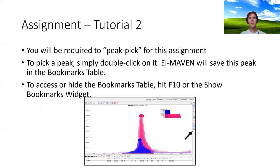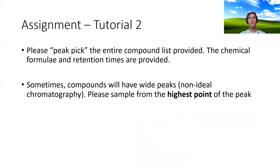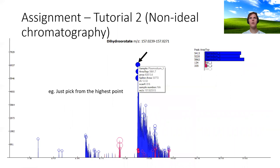For this tutorial, you'll be required to peak pick. To pick a peak, simply double-click on it and LMAVEN will save it into the bookmarks table located at the bottom. To access the bookmarks table, hit F10 or show the bookmarks widget. Pick the entire compounds list provided — the chemical formulae and retention times are provided so peaks should be unambiguous. Sometimes compounds will have wide peaks, which is a case of non-ideal chromatography — just pick the highest point of the peak. If there are multiple peaks, choose the one with the correct retention time based on the CSV file.